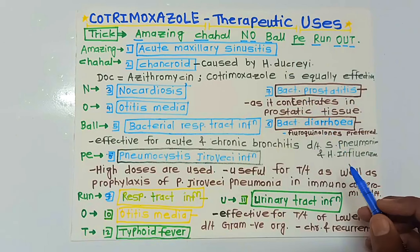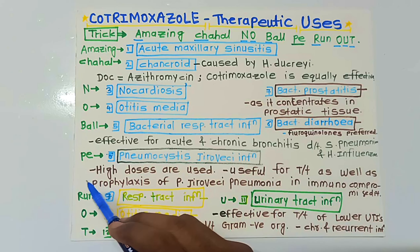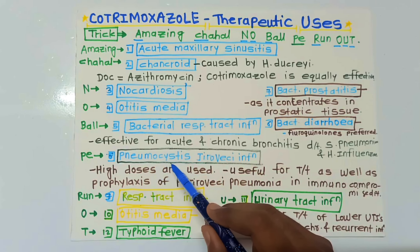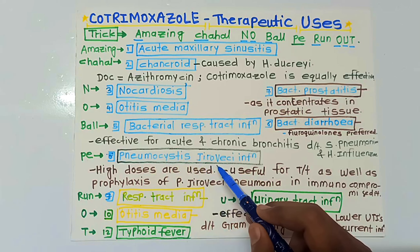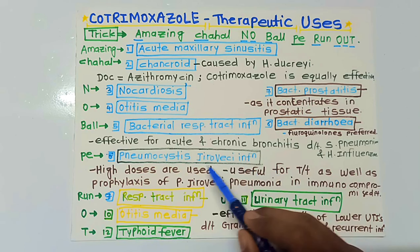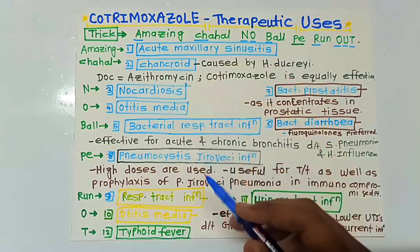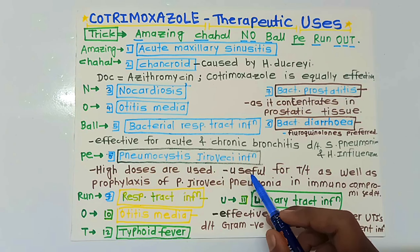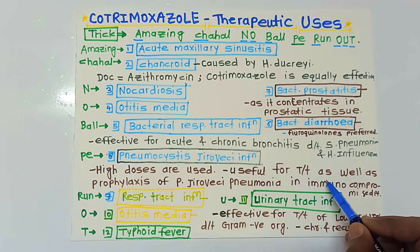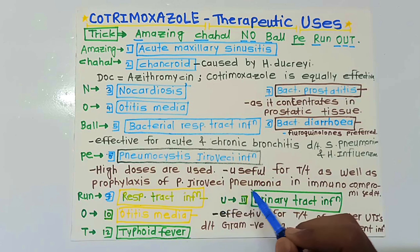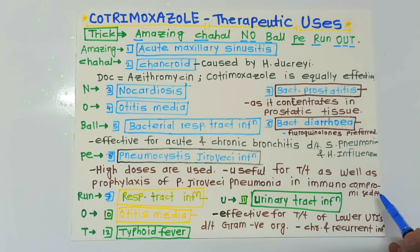In bacterial diarrhea, fluoroquinolones are preferred but Co-Trimoxazole is also used. Next, PE stands for Pneumocystis jirovecii infection. High doses of Co-Trimoxazole are used in this case. It is useful for both treatment and prophylaxis of Pneumocystis jirovecii pneumonia in immunocompromised patients.